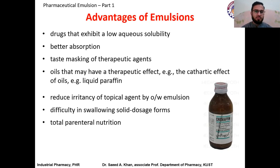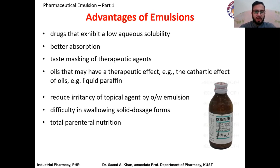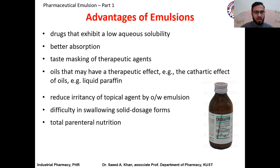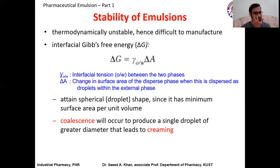Since emulsion is a liquid dosage form, it is useful when patients are unable to swallow solid dosage forms like tablets — for example, children. Emulsions are also used in TPN, which stands for Total Parenteral Nutrition, an infusion given to patients who cannot receive food by mouth. In those conditions, fats, carbohydrates, and proteins are given as infusion, and the fats are dispersed as droplets in the form of an emulsion.